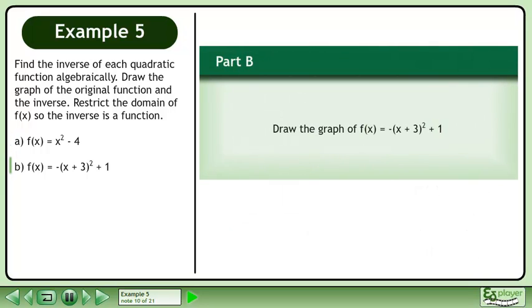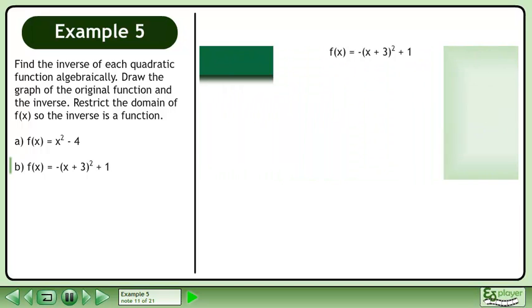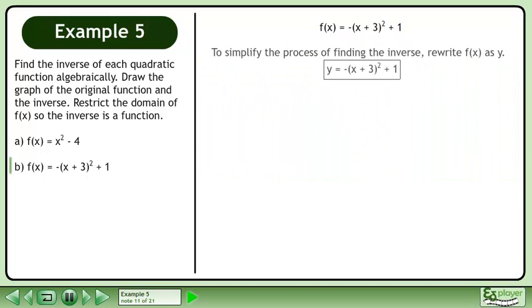In part b, we will draw the graph of f equals negative x plus 3 squared plus 1. To simplify the process of finding the inverse, we write f as y.